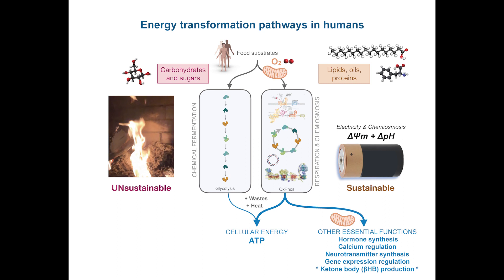There are two main energy transformation pathways in humans. The one on the left is glycolysis — this is chemical fermentation. We ferment carbohydrates, this carbon and oxygen that were put together. This is like burning fuel, like fossil fuel. The other pathway is where you take chemical energy and don't burn it — you transform it into this membrane potential. We do this with lipids, oils, and proteins, and then you can store that energy into a more sustainable form and use it not just to make ATP, but for a number of things.